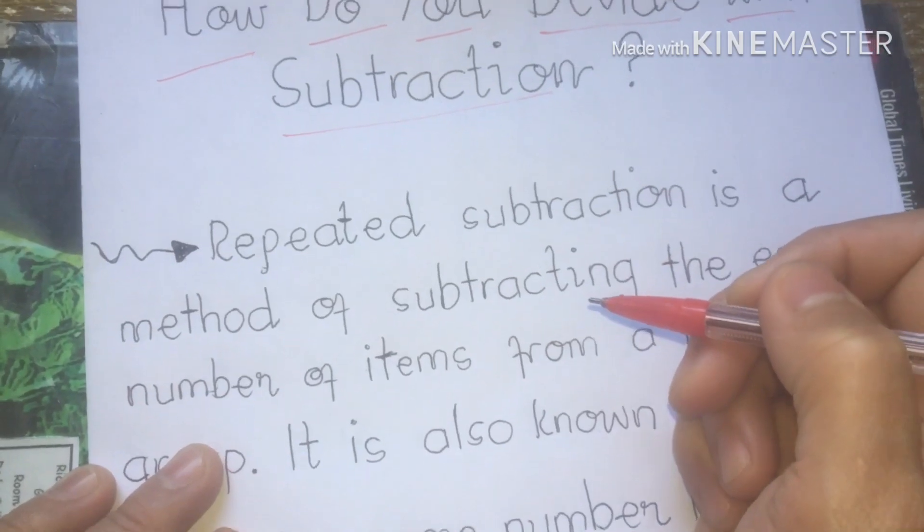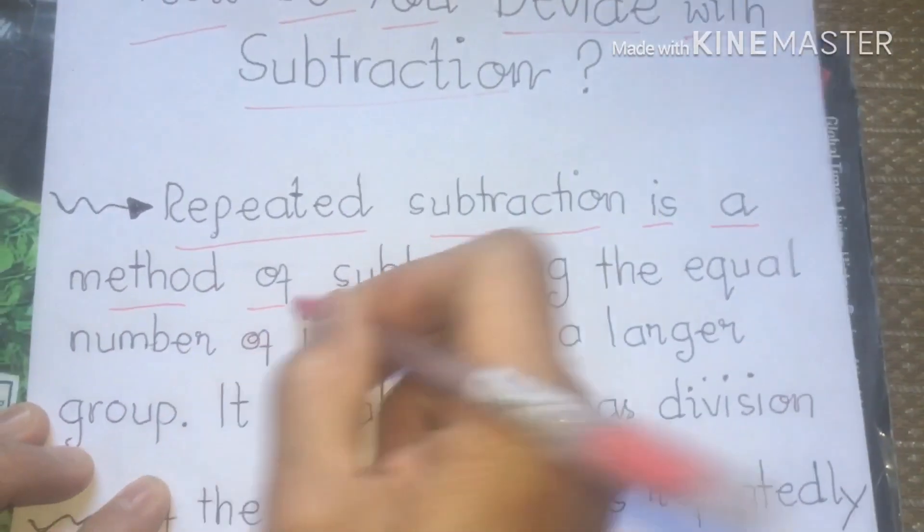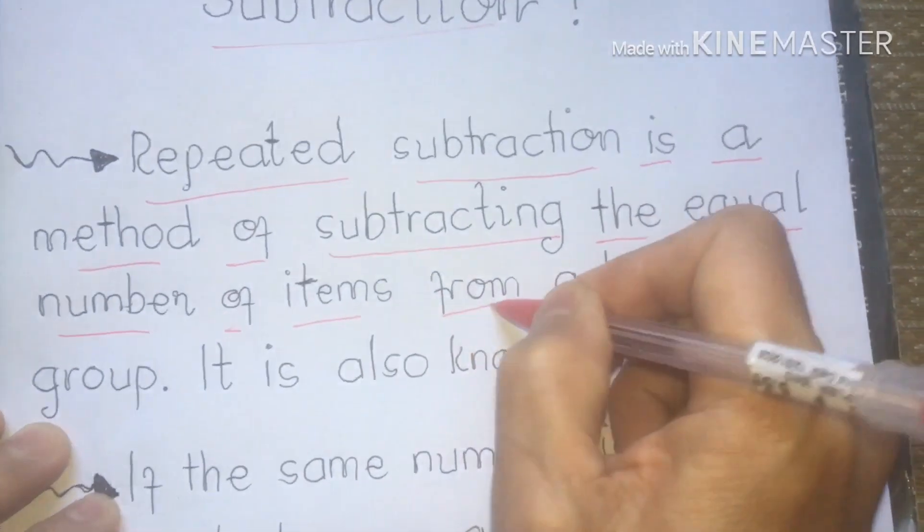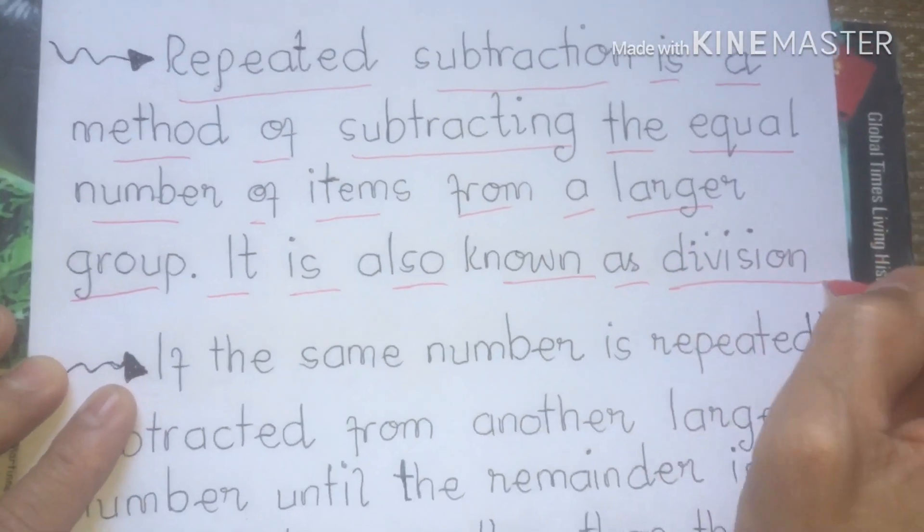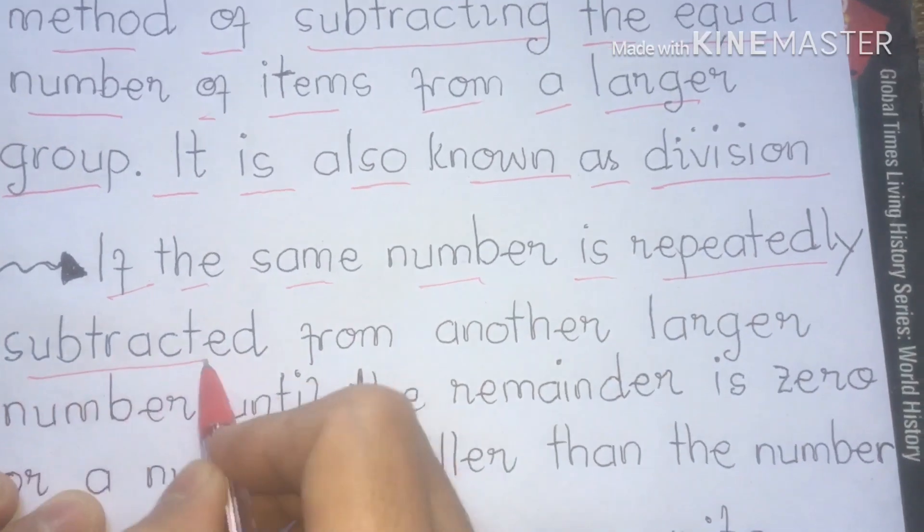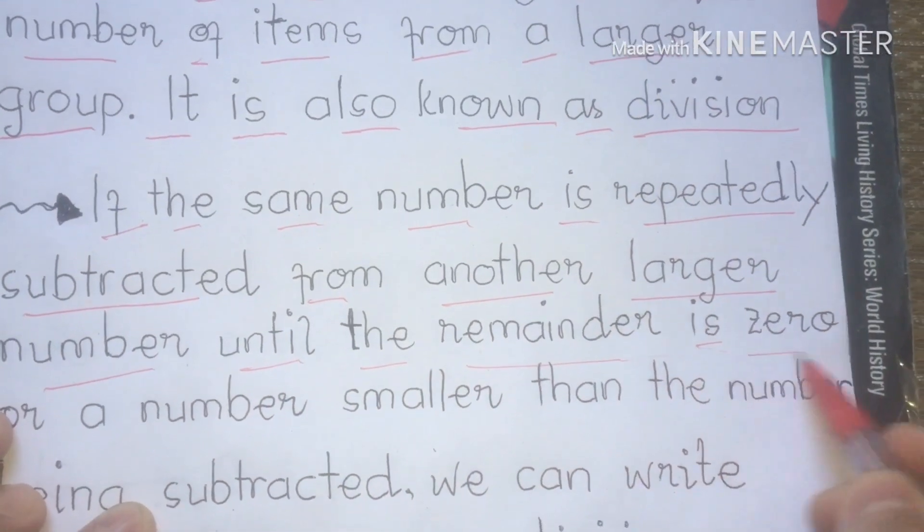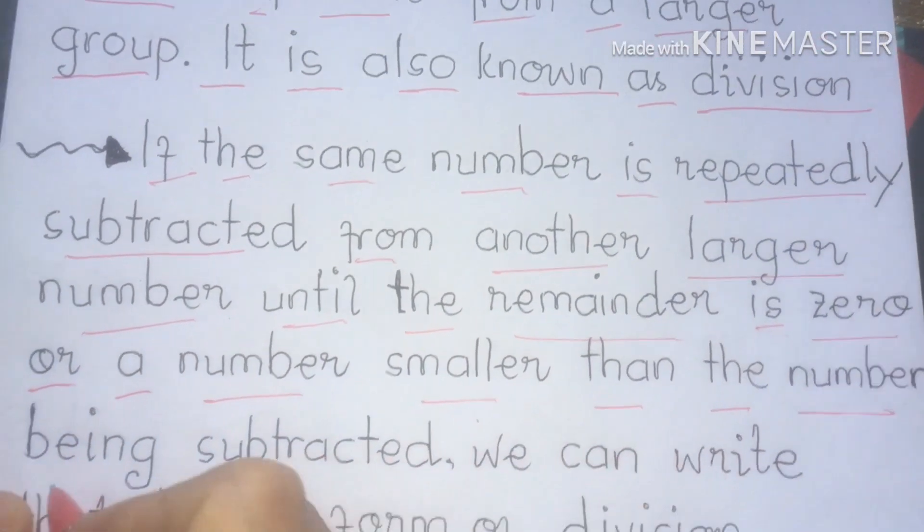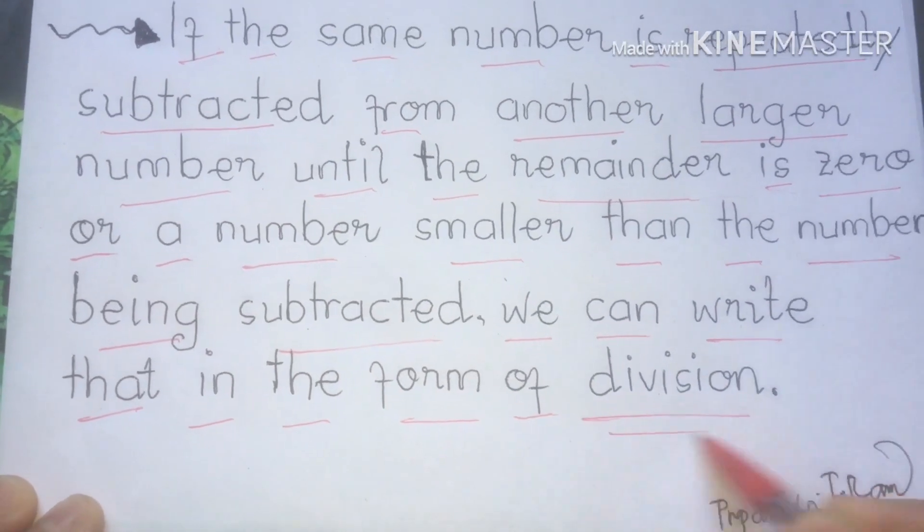How do you divide with subtraction? Remember class, repeated subtraction is a method of subtracting the equal number of items from a larger group. It is also known as division. If the same number is repeatedly subtracted from another larger number until the remainder is 0, or a number smaller than the number being subtracted, we can write that in the form of division method.